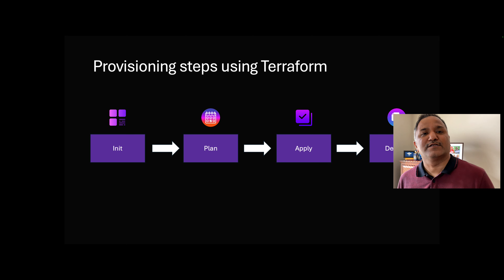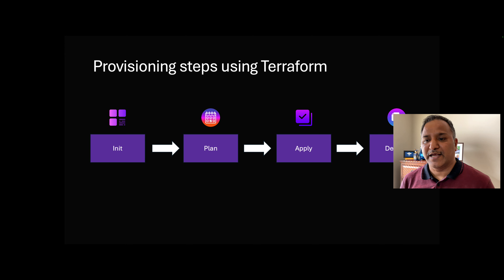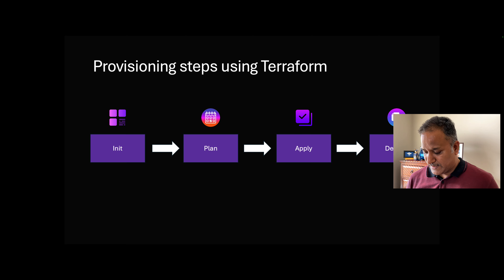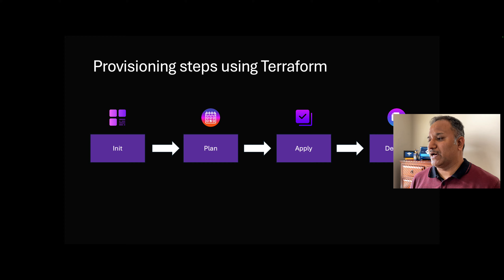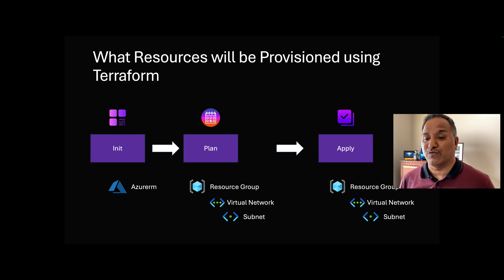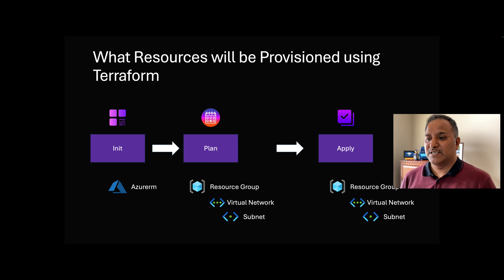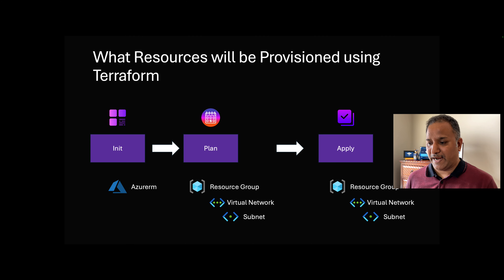These are the different steps we will be using during the videos. We will initialize the Azure Resource Manager, or Azure RM, as the provider using Terraform init. Then we will plan the resources we are going to deploy to Microsoft Azure and then apply those, and optionally we will delete them once the video recording is done. The resources provisioned in this particular video are the resource group, virtual network, and a subnet — all three are linked to one another.